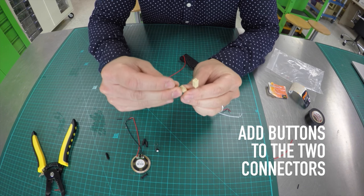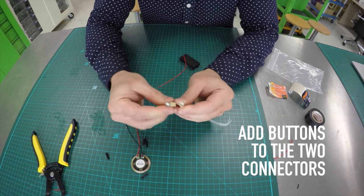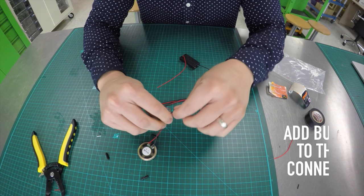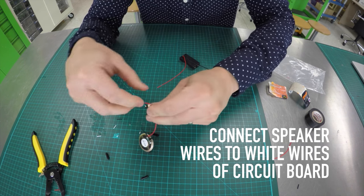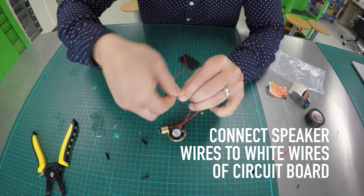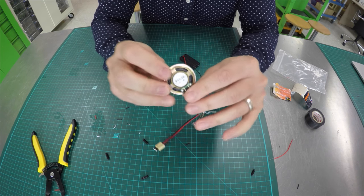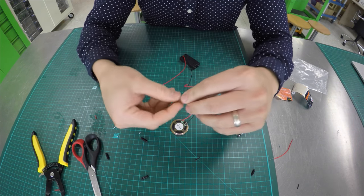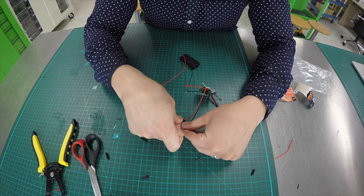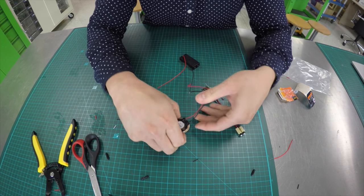Next add the buttons to the two connectors. Then connect the speaker wires to the white wires of the circuit board. I recommend using electrical tape to tape down the wires behind the speakers. The wire connection of the speakers are pretty weak.